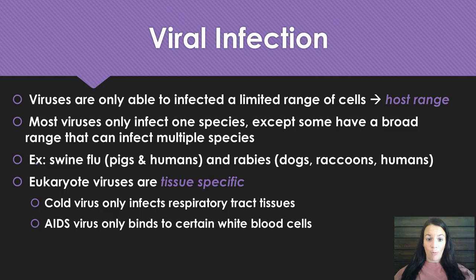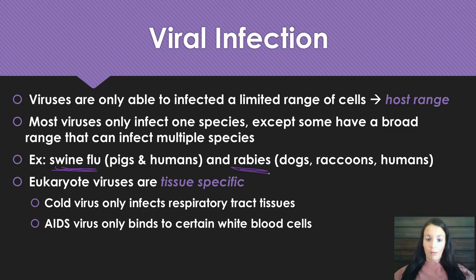Viruses with a broader host range are the ones we most commonly think of — things like swine flu or rabies. If a dog or raccoon has rabies and bites you, you can get rabies too, even though that virus was in a different species. It's also important to note that eukaryote viruses are tissue specific. The cold virus won't infect you unless it contacts the tissues in your respiratory tract. The AIDS virus only binds to white blood cells — it will seek those out because that's the only place it can infect.